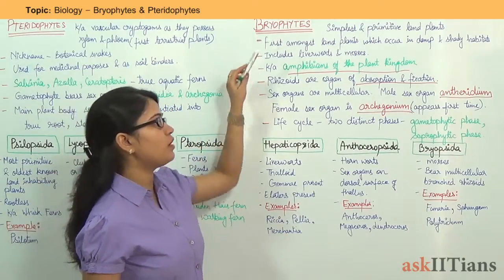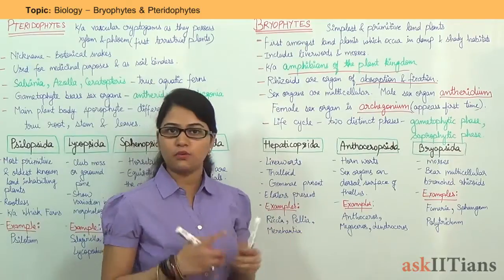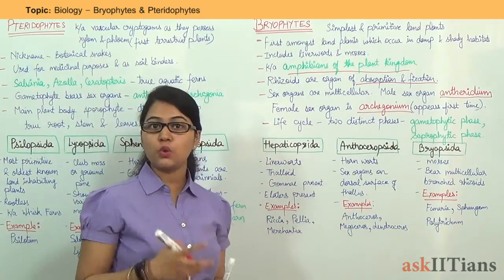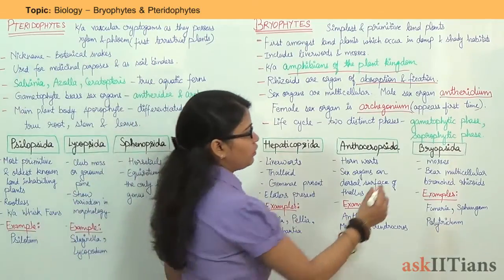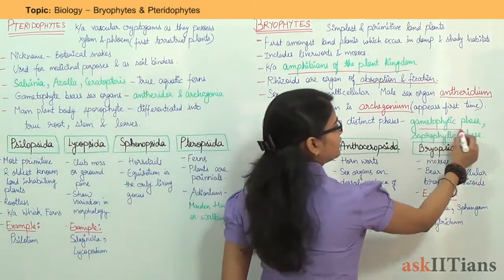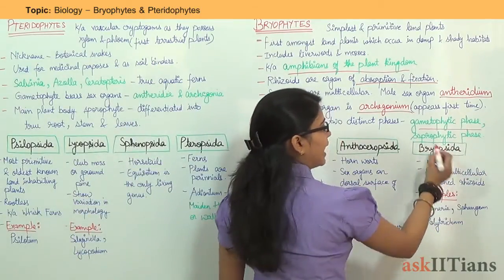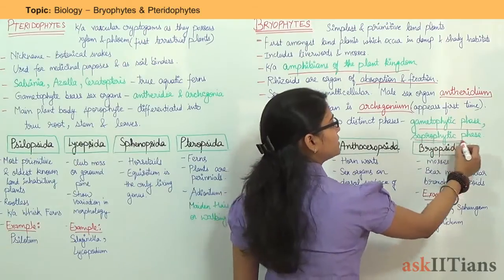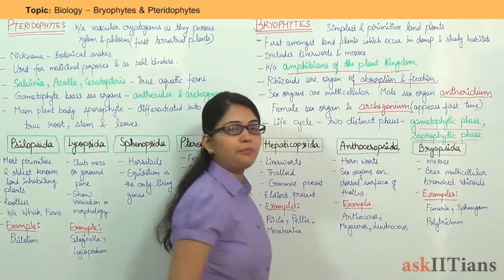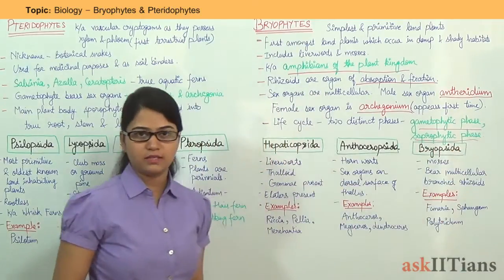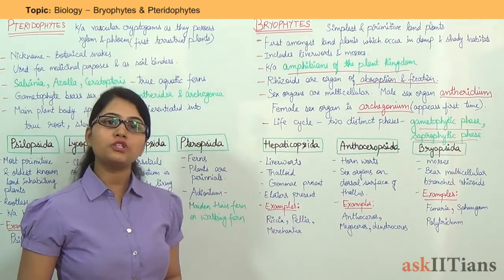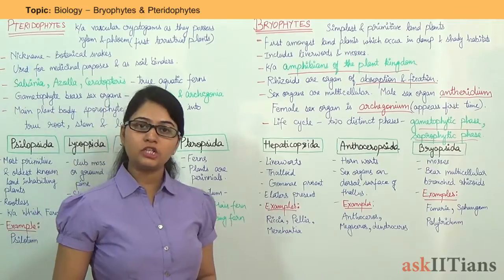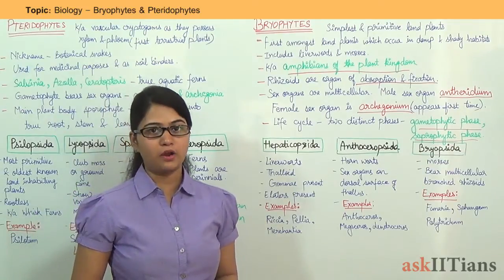The life cycle of Bryophytes is divided into two distinct phases: one is the gametophytic phase and the other one is the sporophytic phase. Now moving on to the classification under Bryophytes.